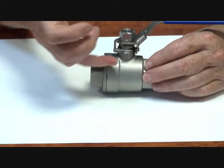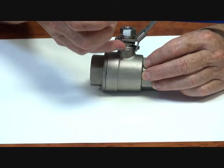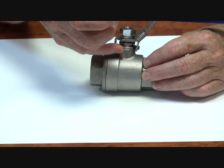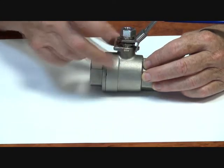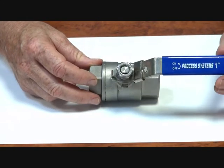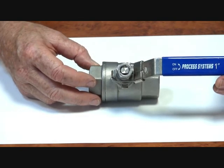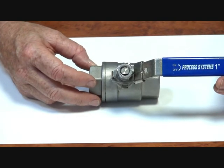In the stem up here there's a Viton backing ring plus the normal Teflon washers up inside here and a thrust washer. Blowout proof stem. Ideal valve for general purpose industrial and water applications.